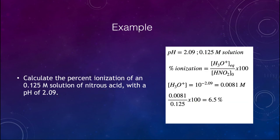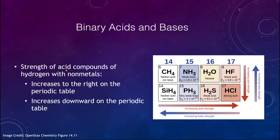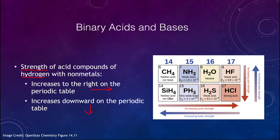When we look at acid compounds, we look at hydrogen combined with some of the nonmetals, focusing on the right portion of the periodic table. The acid strength increases as you move to the right and as you move down on the periodic table. Something like CH4, methane, is neither an acid nor a base. Moving right, you get a very weak base, then neutral, then a weak acid as you move toward fluorine. On the next row, you have neither, then a very weak base, a weak acid, and a strong acid. So as you go to the right and down, acid strength increases.